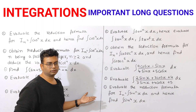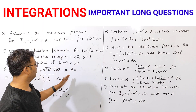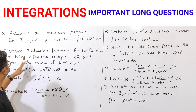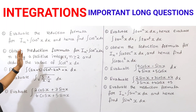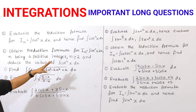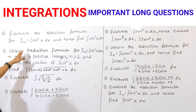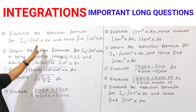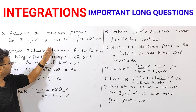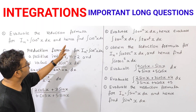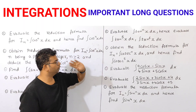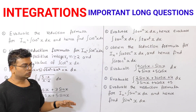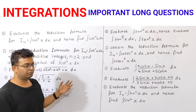So, for integration, the important questions are as follows. First question: Evaluate the reduction formula for I(n) = integration of cos to the power of n of x dx, and hence find the integration of cos to the power of 4 x dx.